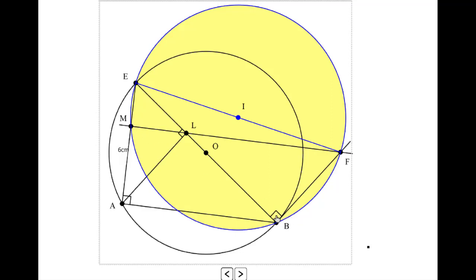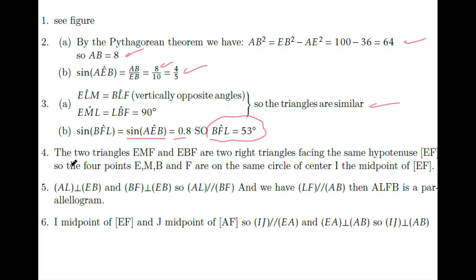Angle EBF is 90 degrees because it is tangent with radius. Both angles M and B inscribed to EF are 90 degrees. The two triangles EMF and EBF are two right triangles facing the same hypotenuse EF. So the four points E, M, B and F are on the same circle of center I, the midpoint of EF.